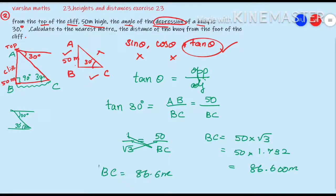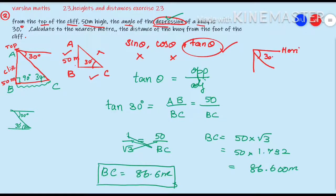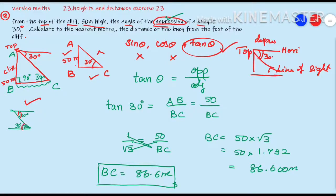So BC equals 86.6 meters — that is our final answer. To summarize: when you have an angle of depression, the angle is measured from the horizontal line at the top down to the line of sight. To use it in a triangle, we shift the angle to the ground using the alternate angles property of parallel lines — both angles are equal at 30 degrees. Then we apply tan theta to solve the problem.